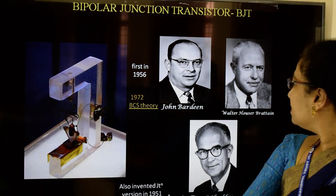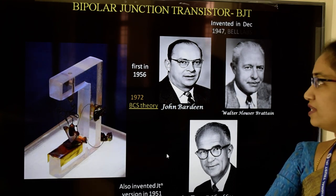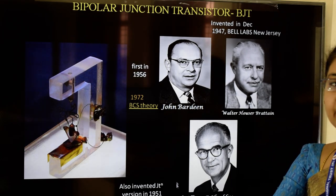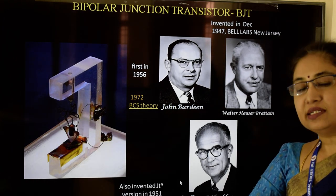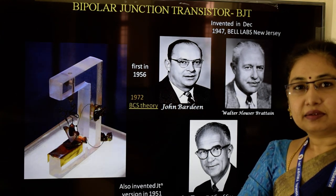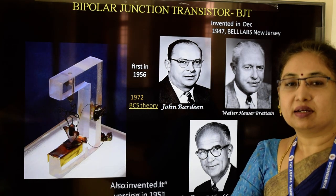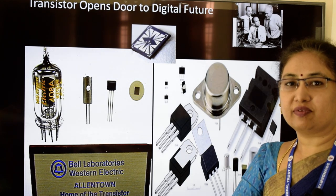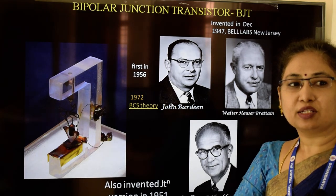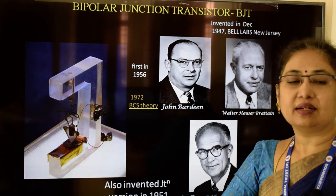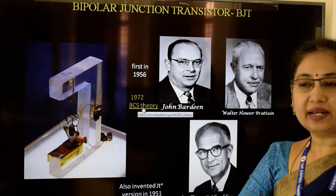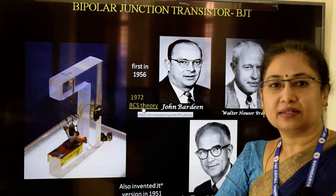The transistor was invented in December 1947 at Bell Labs, America. The head of the team was William Shockley, who later invented the junction version of the transistor in 1951. The inventors of the transistor received the Nobel Prize in 1956. John Bardeen is the only physicist who received the Nobel Prize two times in physics — the first in 1956, and the second in 1972 for explaining superconductivity.